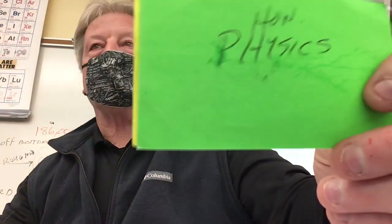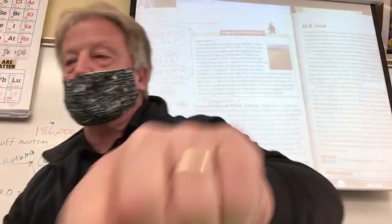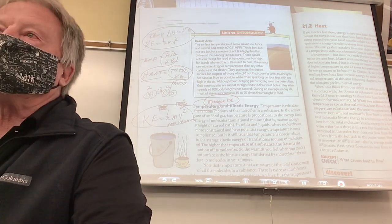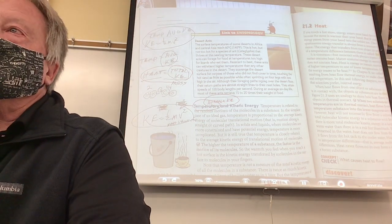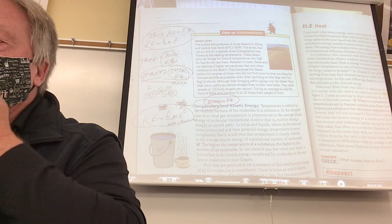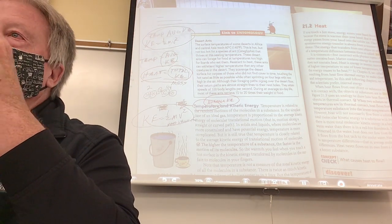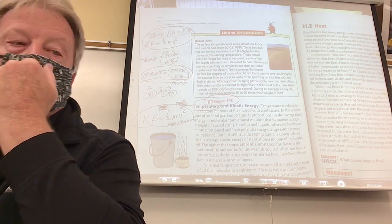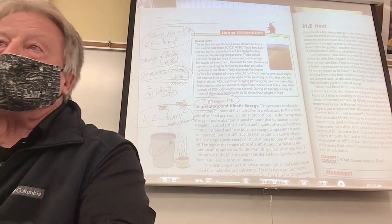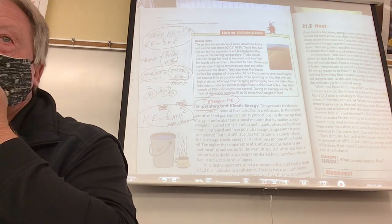All right, you can have the handout sheet I gave you, you can have your book open. So let's go over this — let's do the physics of this. If everything above absolute zero has kinetic energy, we need to look at the kinetic energy equation. It's kinetic energy equals one-half mv-squared — mass times velocity squared.